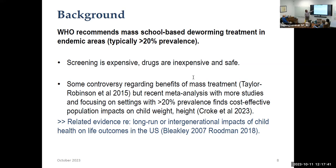There's been some debate about the magnitude of benefits of mass treatment, but all the latest meta-analyses, as long as you restrict attention to settings with at least 20 percent prevalence, show pretty large nutritional gains. Some earlier reviews like Taylor Robinson included data from settings with four or five percent prevalence — and of course if there are no worms, there's no benefit of deworming. There's also US historical evidence: as recently as the 1910s in the US South, hookworm infection rates were 40 to 50 percent. The Rockefeller Foundation's first big program was deworming the US South, and there's been debate among economic historians about the benefits, with some showing larger and some more muted effects.